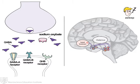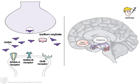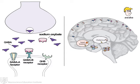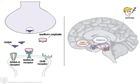Sodium oxabate is a full agonist at gamma-hydroxybutyrate receptors and a partial agonist at GABA-B receptors. As a GABA-B partial agonist, sodium oxabate acts as an antagonist when GABA levels are elevated and as an agonist when GABA levels are low. It is hypothesized that sodium oxabate increases slow-wave sleep and improves cataplexy through these actions at GABA-B receptors.